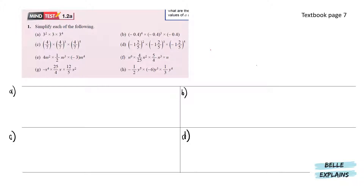So first, let me explain. When we have a base with the power of m times the same base with another power, that will add the powers together, so that will be a base of a to the power of m plus n.